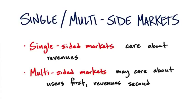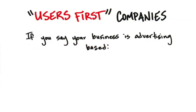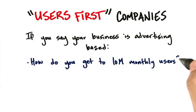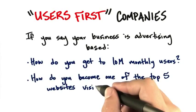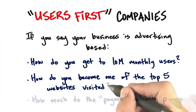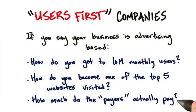I tend to prefer that we actually try to look for who the payers are as early as possible, but this is a question you might want to ask your investors. Do we go for lots of users and then say, if we get 10 million people, the revenues will come? Or do we want to look at both sides of the market at the same time? If you're in a physical channel, my suggestion is to look at users and payers simultaneously. If your business is advertising-based, tactics include: how do you get to 10 million monthly users, how do you become one of the top five websites, and how much do the payers actually pay?